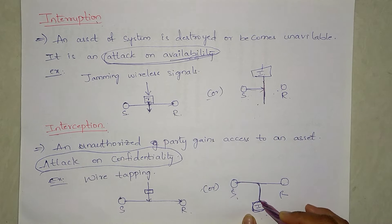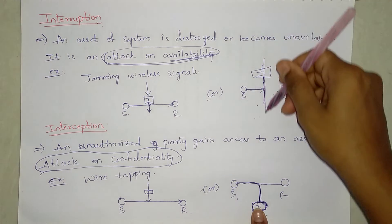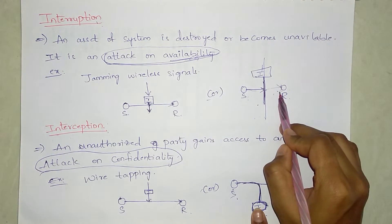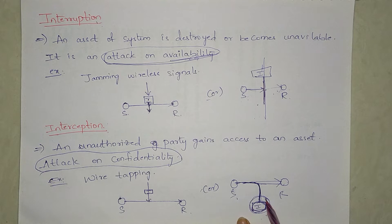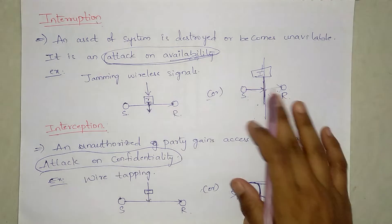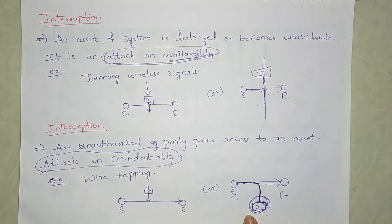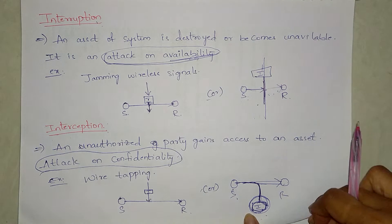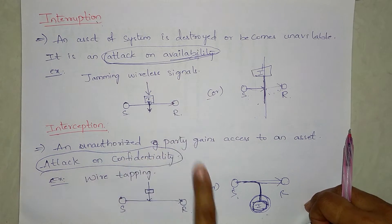In interception, an unauthorized party gains access to the asset, but we will not know the hacker is listening. The hacker stays aside and just listens to the conversation. The key difference is: in interruption, data never reaches the receiver; in interception, data does reach the receiver but is also accessed by the hacker. An example is wiretapping; for interruption, an example is jamming wireless signals.